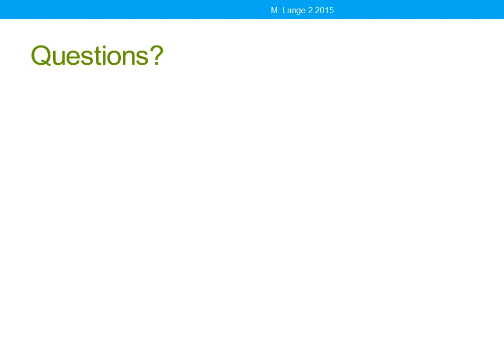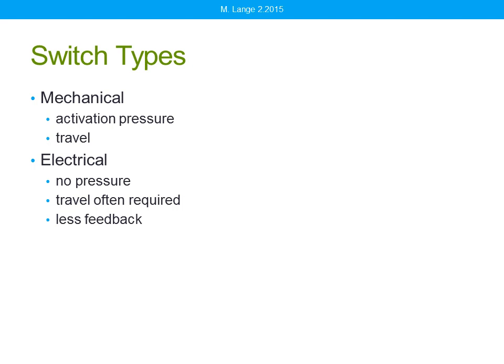That's a little bit about assessment. Before we get into the actual switch types, let me make sure I answer any questions. Feel free to type in your questions or comments at any time in the chat box — if I don't answer right away, I might just know that we're going to be covering that in a few minutes. Switches are categorized into two main types: mechanical and electrical.